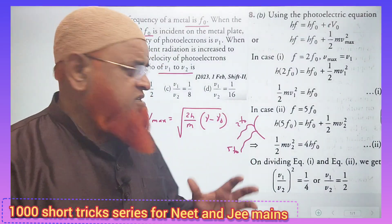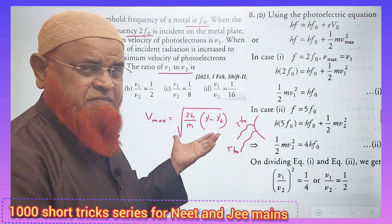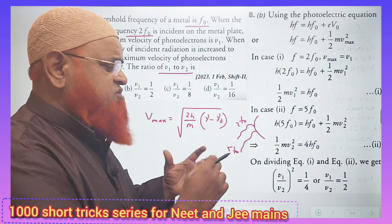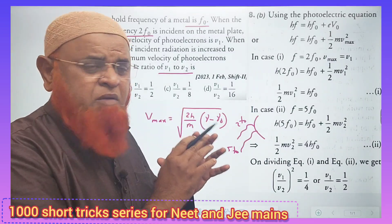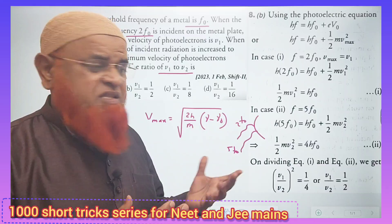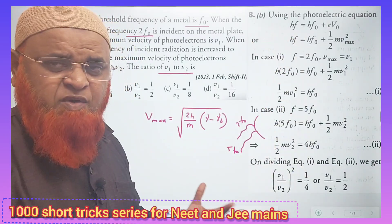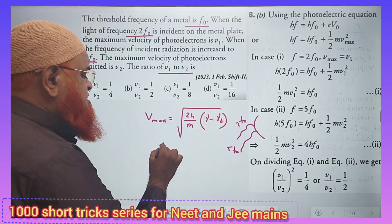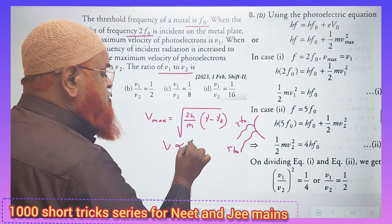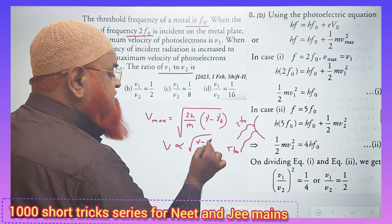And you all know that this is the formula for maximum velocity. After doing simplification, after doing thousands of problems, you get a conclusion that the velocity formula is this one. From this it is understood that velocity is directly proportional to difference in the frequencies.